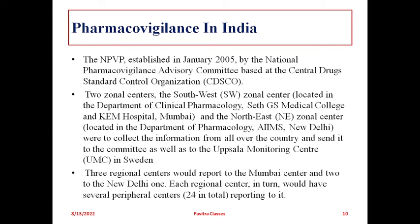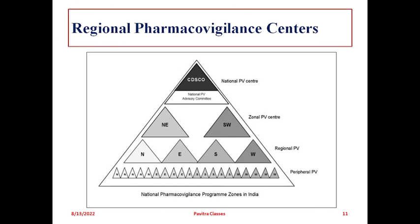The flowchart shows: CDSCO National Pharmacovigilance Advisory Committee as the main center for regulatory authorities. Southwest zonal center is Mumbai (KEM Hospital) and Northeast zonal center is Delhi (AIIMS). Under Delhi, two regional pharmacovigilance centers report, and under those, 24 peripheral pharmacovigilance centers operate. Smaller peripheral centers send data to regional pharmacovigilance centers, regional to zonal, and zonal to the national PV center. These are the centers generated for pharmacovigilance in India.